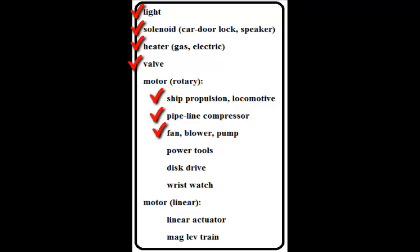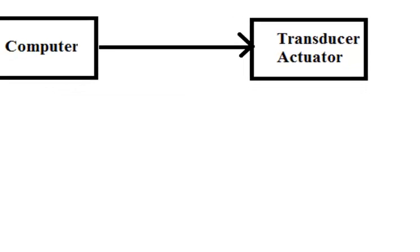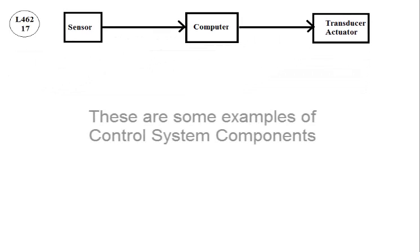Also included are power tools, disc drives, wrist watches, and linear motors including linear actuators and magnetically levitated trains. These are some examples of control system components.